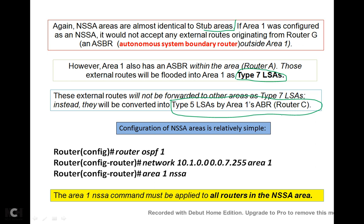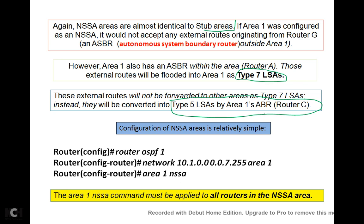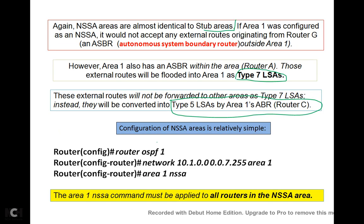Router C is the ABR — Area Border Router — for area 1 and area 0. Whatever update comes from area 1, before going to router D on the area 0 side, it will be converted into Type 5 LSAs. So this is the basic concept of Not So Stubby Area. Now if we want to configure this in an OSPF environment, let's look at the commands.